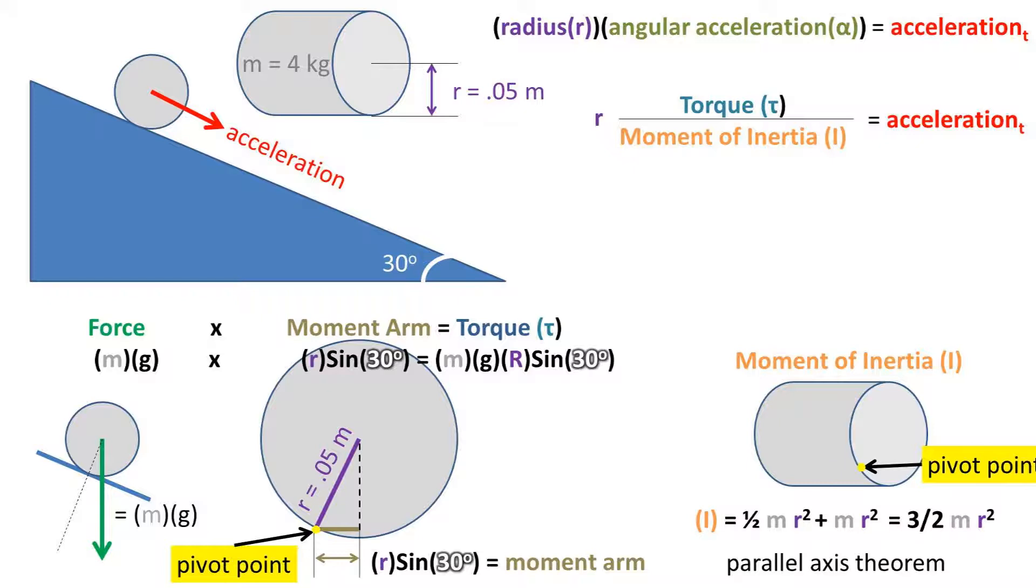Remember, our pivot point is not here. We will need to use the parallel axis theorem, which I'm not going to go into great detail, but basically, if we want to change the pivot point of a known moment of inertia, we can add the mass times the radius squared to it, assuming that it's parallel to the axis. This yields three over two times the mass times the radius squared equals the moment of inertia in this case.